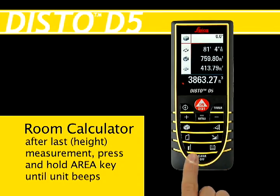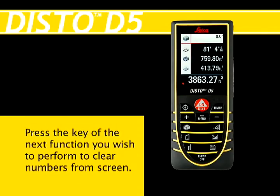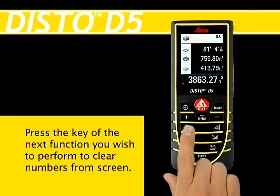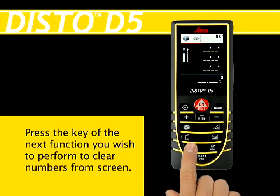The DISTO unit will then display the total linear measurement of the room's base, the total wall area, and the floor or ceiling area of the room. Press the button of the next function you wish to perform to clear the numbers from the screen.